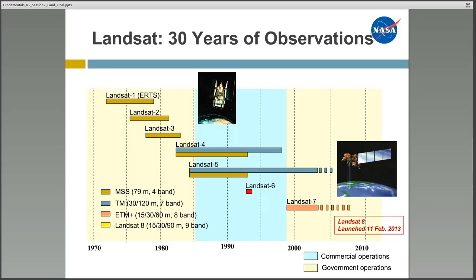Next I'll be discussing the Landsat satellites. Landsat was first launched in the early 1970s. The data from the early Landsat sensors were called Multispectral Scanner imagery, or MSS. Those data have a lower spatial resolution — 79 meters — while the current Landsat data are mostly 30 meters. Most recently, Landsat 8 was launched in February 2014. We have this continuous data at fairly high resolution, which is very useful for examining land surface changes over time, and all of these data were recently made freely available by the USGS.